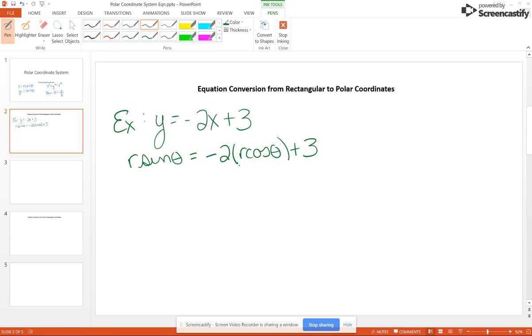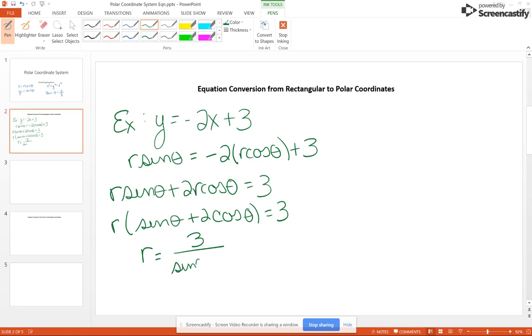In this case, I'm going to solve for R. I'll add negative 2R cosine theta to both sides, so R sine theta plus 2R cosine theta equals 3. Then factor out the R – so R times sine theta plus 2 cosine theta equals 3. Now divide both sides by what's inside the parentheses, which gives us R equals 3 divided by sine theta plus 2 cosine theta. There are always identities you can use, but I would stop here.